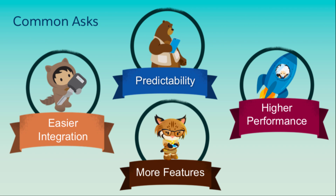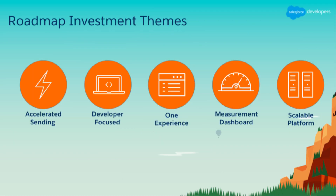More is better, and customers are asking for more — easier integration, since SOAP is becoming less relevant while REST endpoints are becoming more relevant. You're asking for predictability — you want to understand exactly what's happening with that transactional message as soon as you send it, and to be notified in real time on the status. Higher performance is also important since this has its own SLOs because of the urgency and real-time expectation. So we are investing in five core areas.